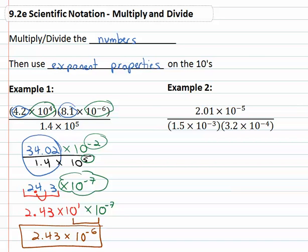Let's try another example. In example two, we notice the multiplication has to be done in the denominator, but the pattern is much the same. Multiplying the numbers together, the numerator is still going to be the same, 2.01 times ten to the negative fifth, all over.